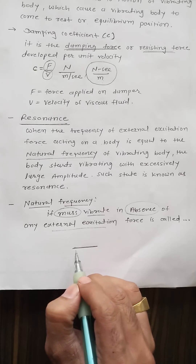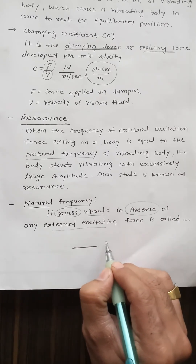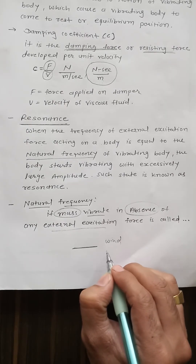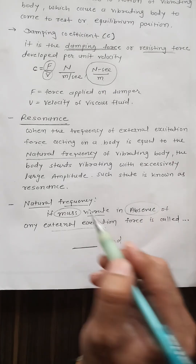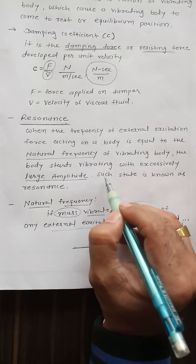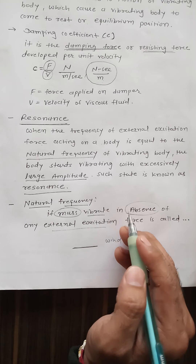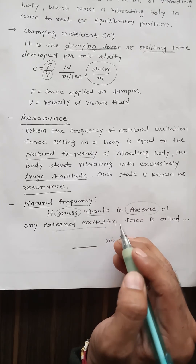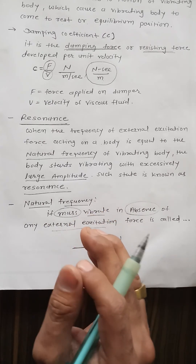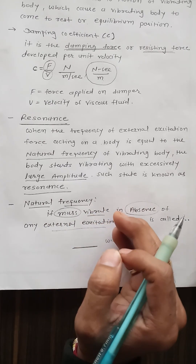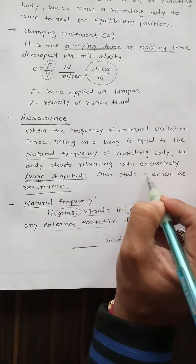For example, consider a bridge that vibrates due to vehicle load. At the same time, wind is also present. If the frequency of that wind matches the vibration frequency of the bridge caused by the load, then excessively large amplitude vibrations are produced. Such a state is known as resonance.